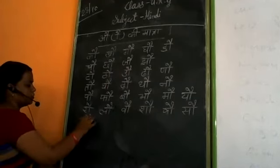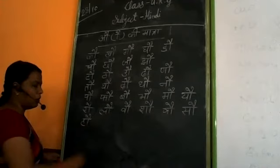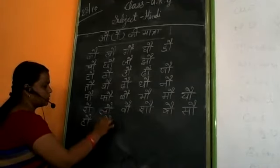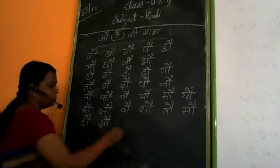Sa, au ki matra, sau. Ha, au ki matra, hau. Cha, au ki matra, chau.